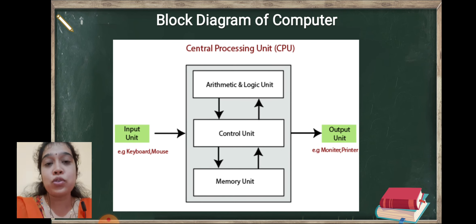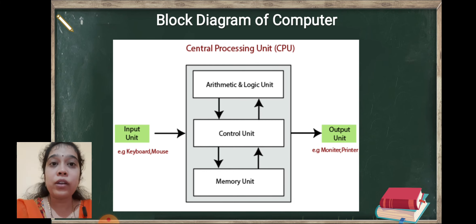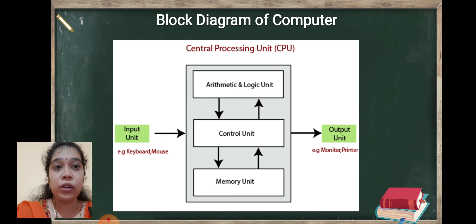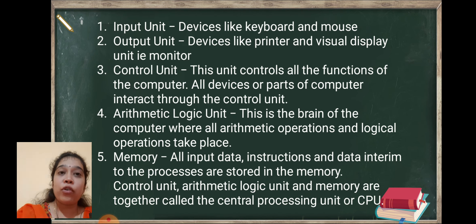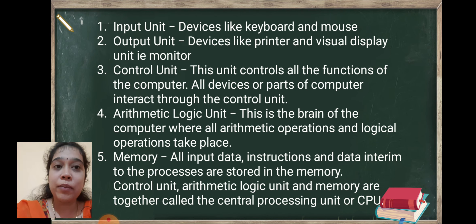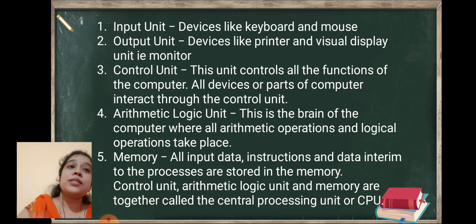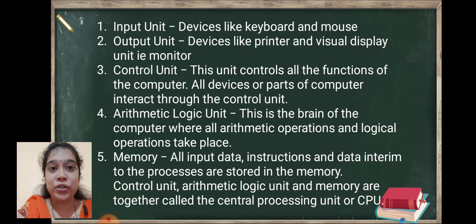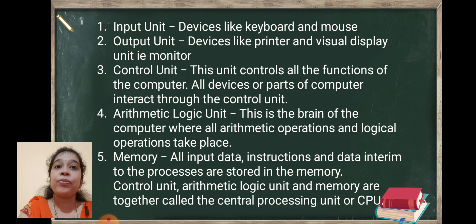In this way, control unit is used to control all processes of the computer, and even for interaction between the devices we use the control unit. Next point is arithmetic and logic unit — this is the brain of the computer where all arithmetic operations and logical operations take place.